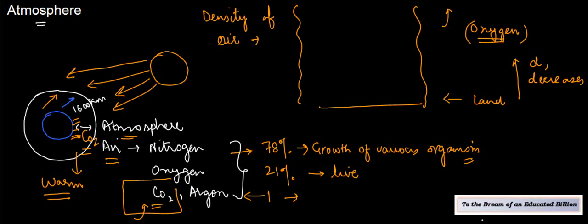Now, the 1600 km of atmospheric layer that I spoke about is basically divided into five parts. And if I talk about them, starting from earth, the first one is what is called the troposphere.